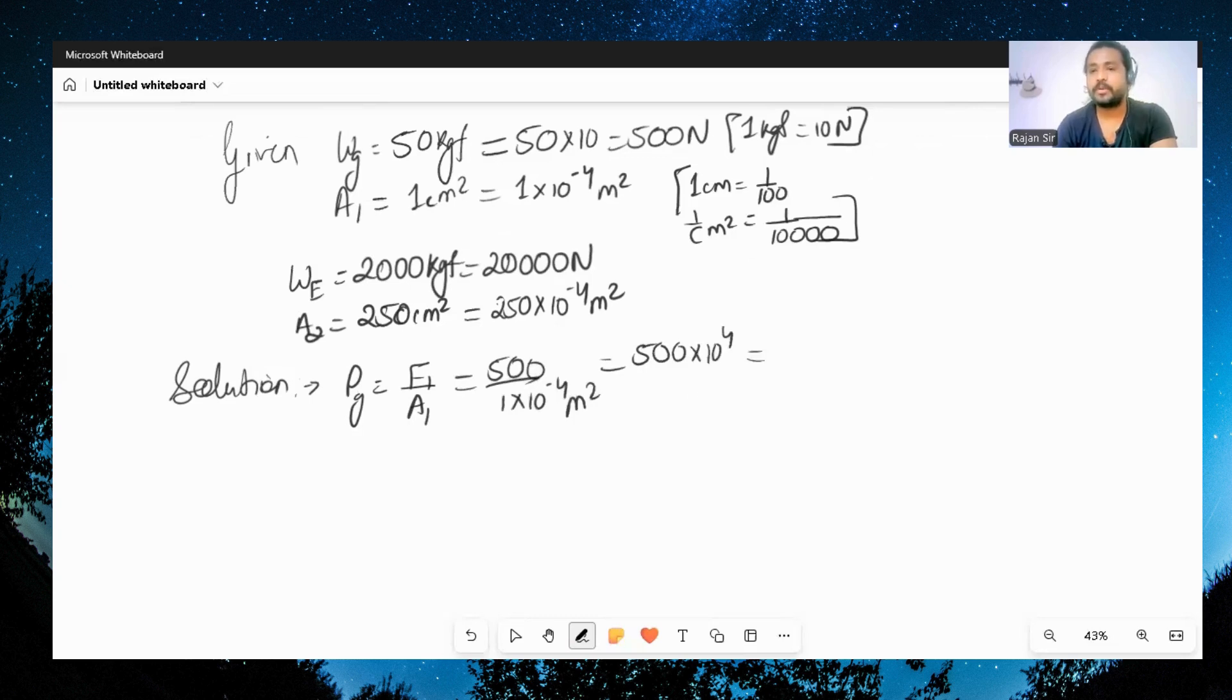And that would become 5 times 10 raised to 6 pascals. Quite a huge pressure. Now pressure due to elephant, you can take it as F2 by A2. This is F2, by the way this is F1.